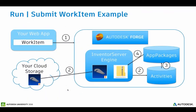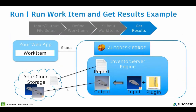Here's the workflow for actually submitting a work item: you submit your work item to Forge in the design automation API. The worker Inventor server engine gets your input file from your cloud storage, pulls the activity from the activity repository, and since the activity specifies the app package, will also pull your app package in from the app package repository. Then we're set up to actually run the job. When we run the job, we take your input plus the code in the plug-in, that generates the output as well as a report. You can see any status from during the running of that work item, plus any output you wanted to specify in the plug-in.